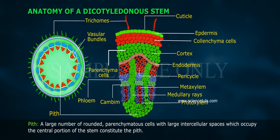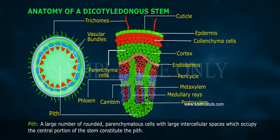Vascular bundles are arranged in a ring — this arrangement is a characteristic of dicot stems. They are conjoint, open, and have endarch protoxylem. Pith consists of a large number of rounded parenchyma cells with large intercellular spaces, which occupy the central portion of the stem.